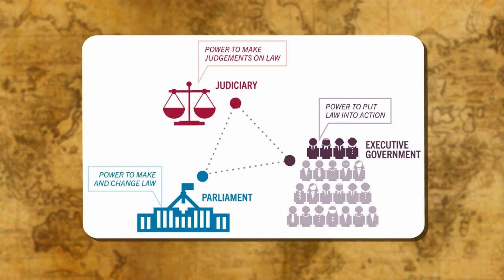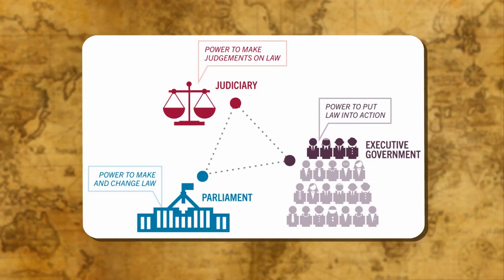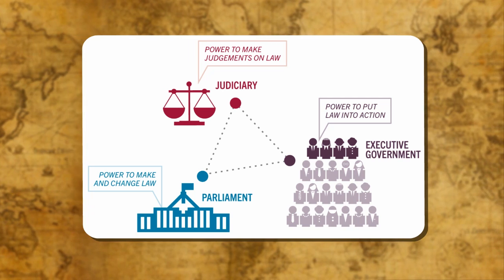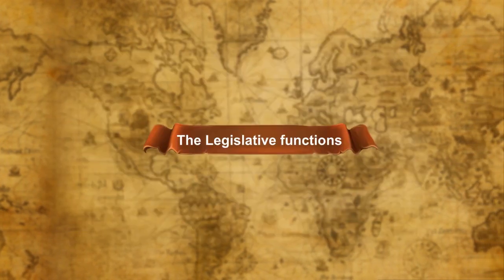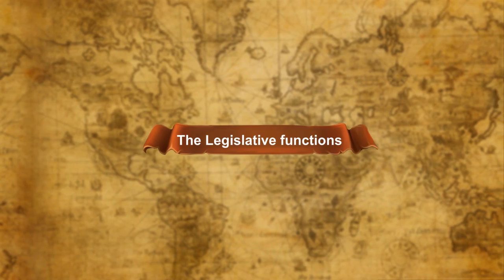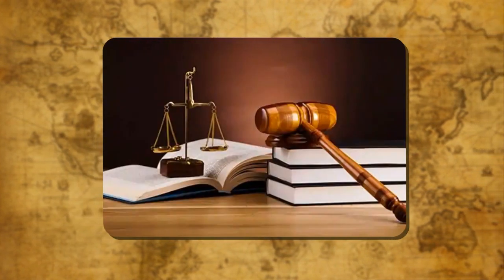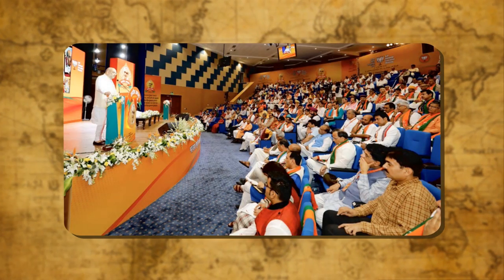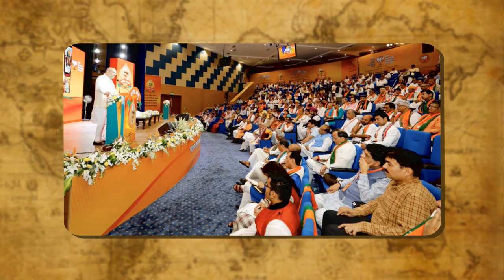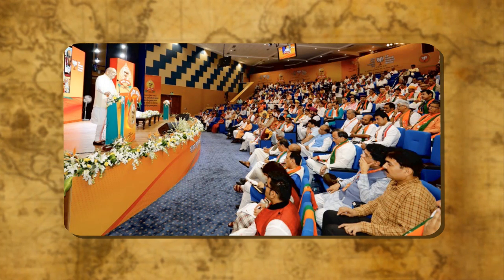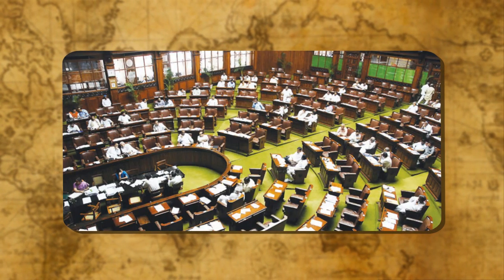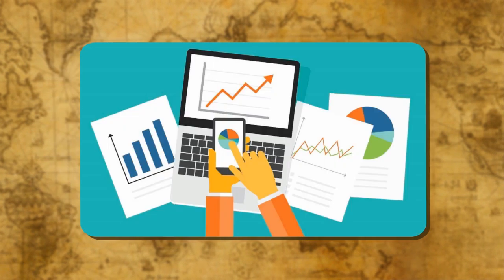Three functions are performed by the government: the legislative functions, the executive functions, and the judicial functions. The main legislative function is to make new laws and amend old ones. It exercises control over the executive — the Council of Ministers is answerable to the parliament. Parliament can amend the constitution according to the procedure. It controls the government's finances; the budget is presented before the parliament by the finance minister. Parliament can reject or pass any proposed tax.